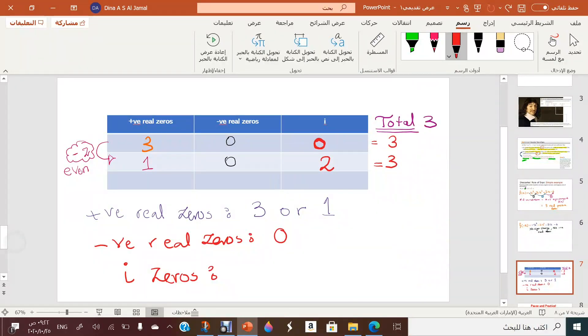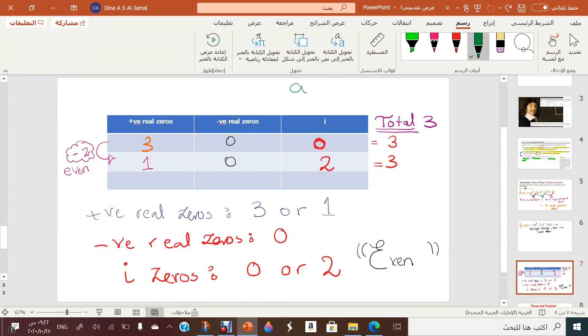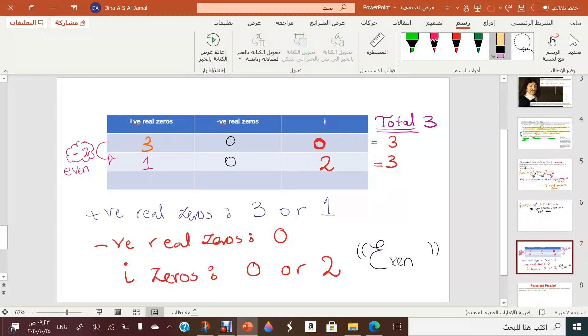So it can be zero or two. And pay attention to a note: the complex zero or the imaginary zeros must be always even number. Why? Because of the complex conjugate rule. Whenever you are having an imaginary number ai, it is a must to have another conjugate for it minus ai. So you have to put this in your mind. For this we are having even number of imaginary zeros. So if you got here any odd number, you have to know that your solution is wrong and you have to repeat your solution again.